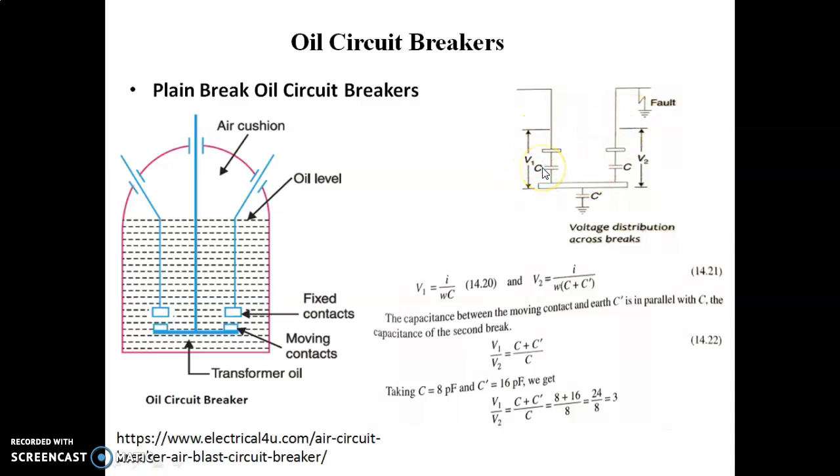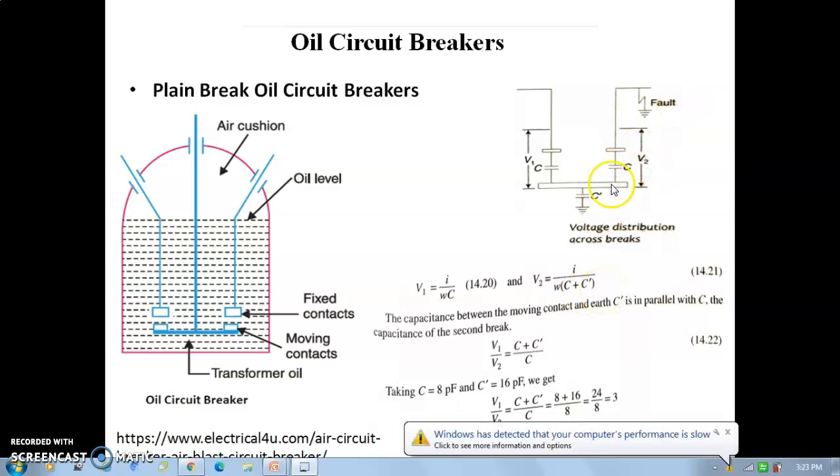The capacitance C is between the fixed contact and one contact, and C dash is between the moving contact and earth. This is the fixed contact capacitance. One side voltage is V1 and here voltage is V2. C and C dash are connected in parallel. Therefore, we can write: V1/V2 = I/(ωC), and V2 = I/(ω(C+C')). Because this is connected to earth, these two are in parallel. V1/V2 = (C+C')/C. This is the voltage distribution across the breaks.